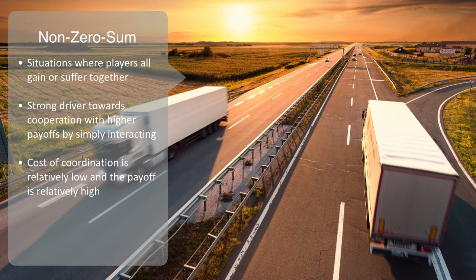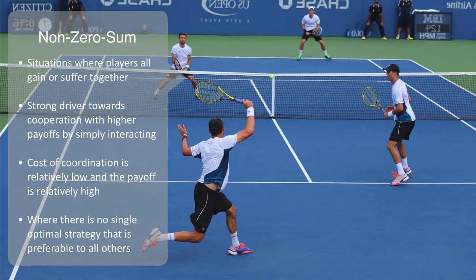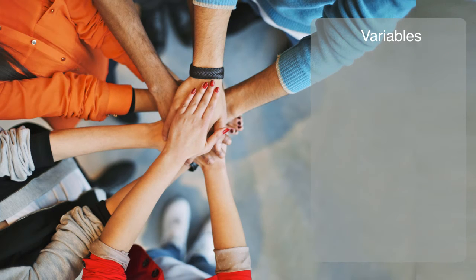But of course not all scenarios are like this. Non-zero-sum games often involve an interplay between competition and cooperation. As an example, we might think about a game of doubles tennis where you have a zero-sum game of competition with your opposition, but a positive sum game with your team member. Problems in the real world are typically non-zero-sum, where there is no single optimal strategy that is preferable to all others, nor is there a predictable outcome. Players engaged in a non-zero-sum conflict have both some complementary interests and some interests that are opposed.